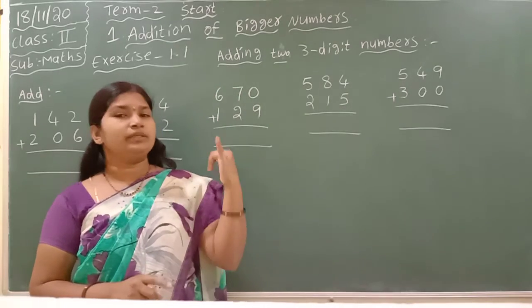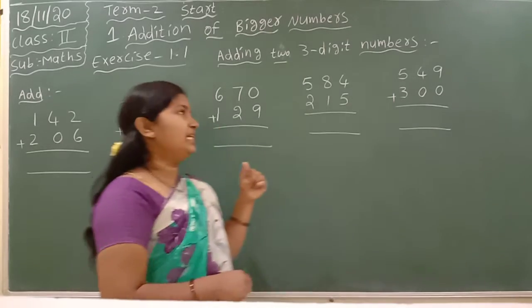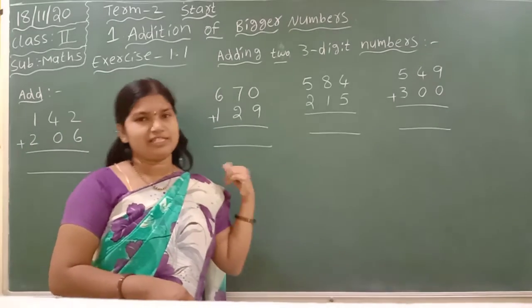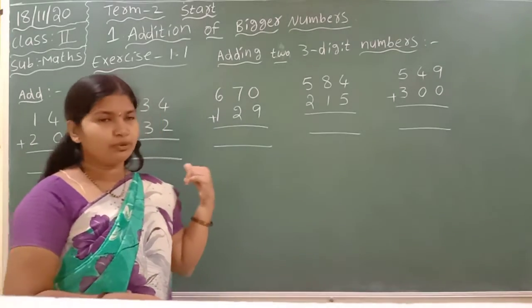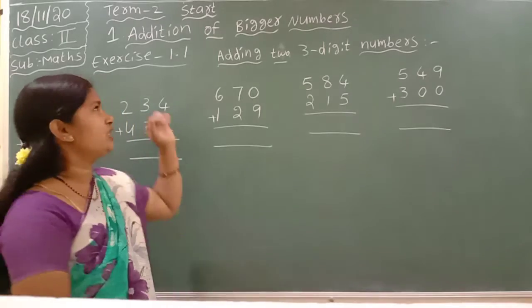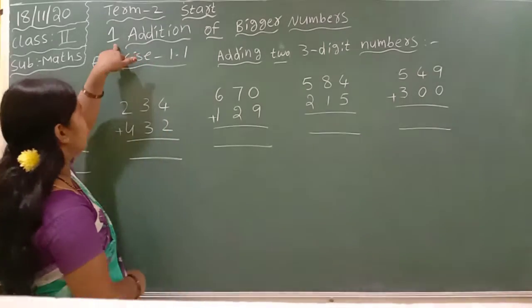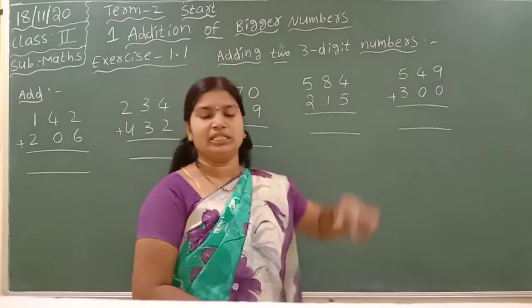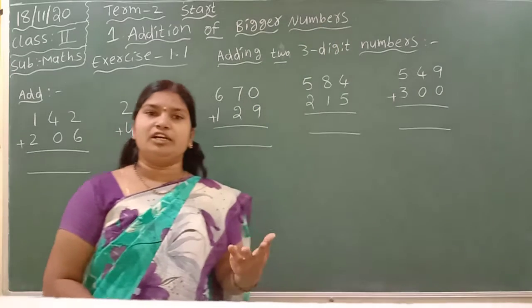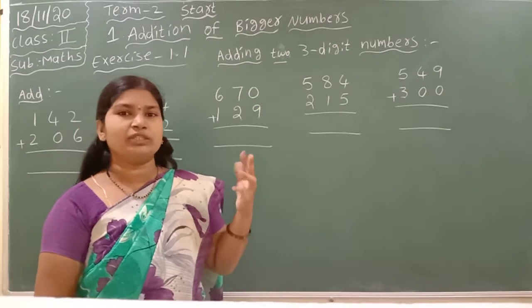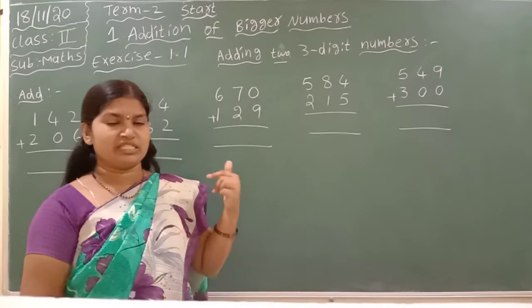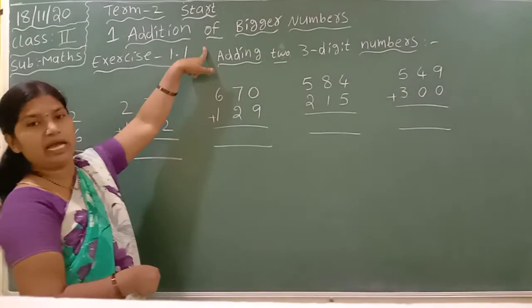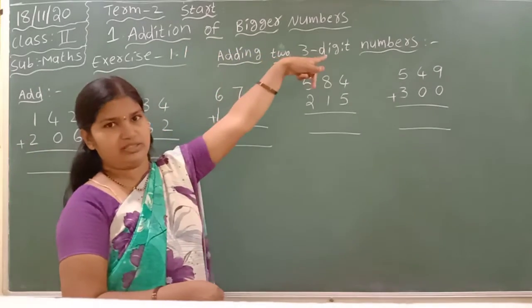Term 2 book — the subject extra book — page number 46. In Term 2 we are starting the first chapter: Addition of Bigger Numbers. In Term 1 we studied how to add 2-digit numbers, but in Term 2 we are adding bigger numbers.